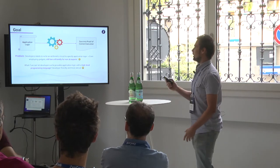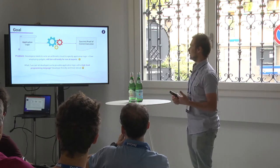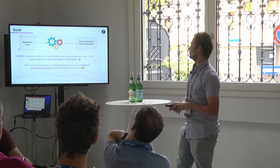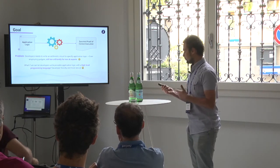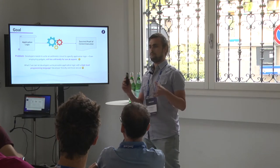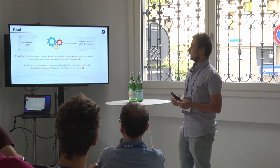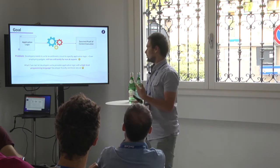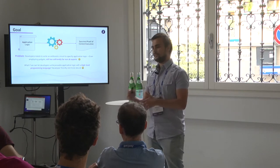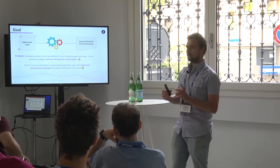The problem when we write provable application logic is that it usually requires developers to write this logic in the form of an arithmetic circuit. Writing an arithmetic circuit means specifying the computation as a set of constraints on the values involved. Libraries for circuit writing usually expose interfaces called gadgets — methods which allow implementing some operation — and these operations are translated to constraints. But even employing these gadgets, the interfaces are still quite low level.